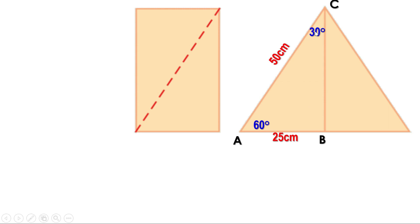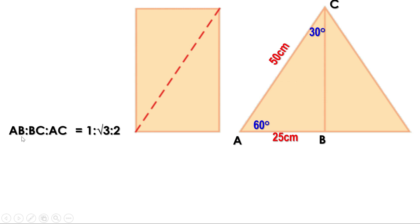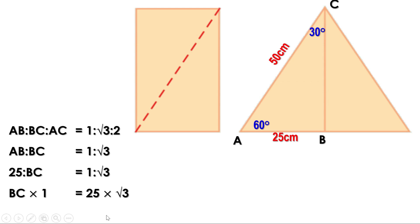Let the first triangle be ABC. AB is the breadth and BC is the length of the rectangle, so it is enough to find BC. Triangle ABC is a 30-60-90 triangle, so the ratio of sides is 1:√3:2. The smallest side AB is opposite the 30-degree angle. So AB:BC:AC = 1:√3:2. We have to find BC. We know AB is 25, so 25:BC = 1:√3. Therefore 25 × √3 = BC × 1, giving BC = 25√3 centimeters.